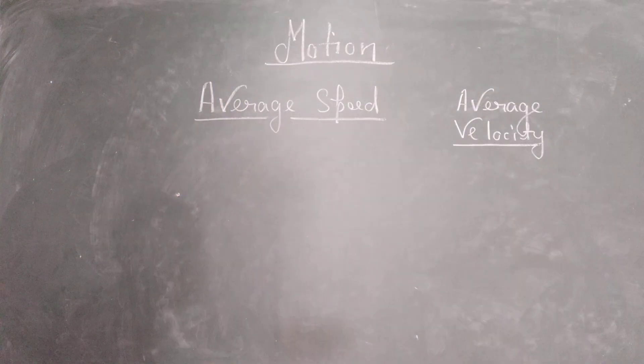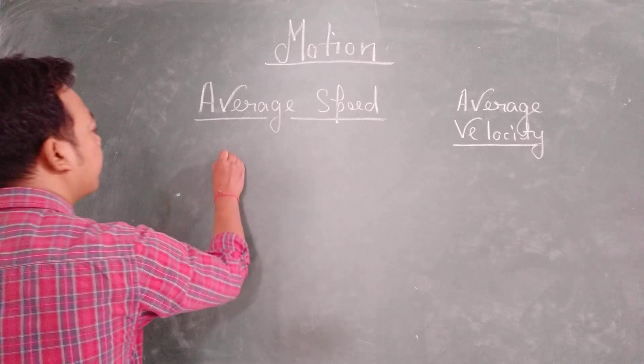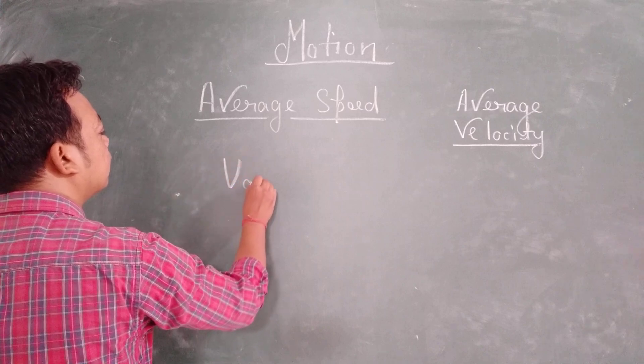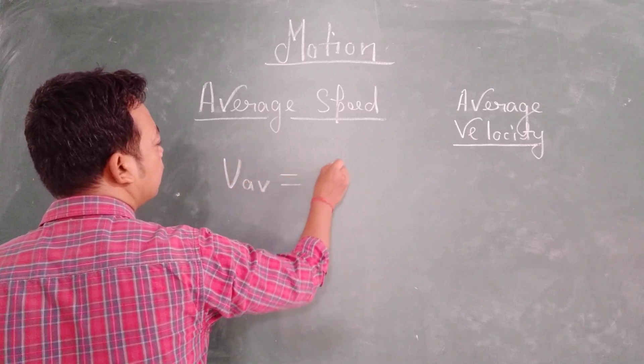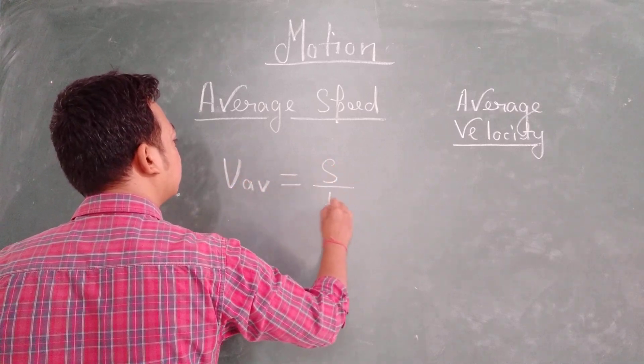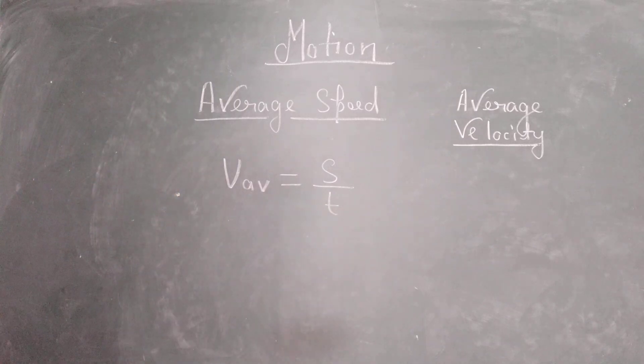If we talk about the average speed, average speed is denoted with the letter V_av. But remember that V should be capital. So here V_av denotes average speed, S denotes distance and T denotes time. So this is the basic formula we use for average speed.